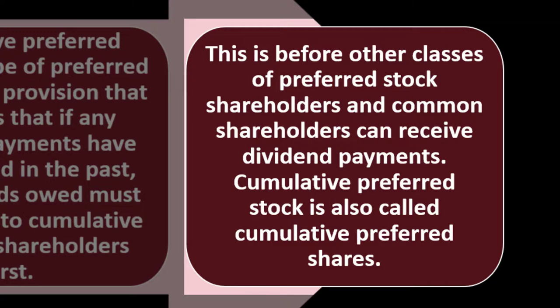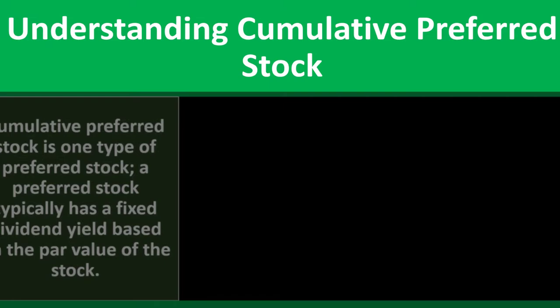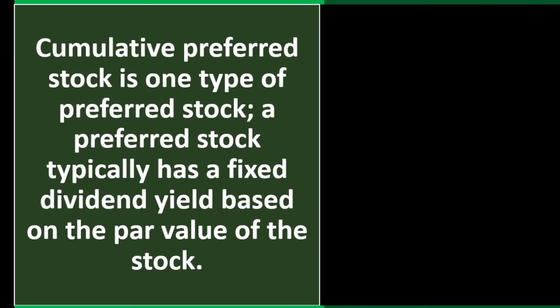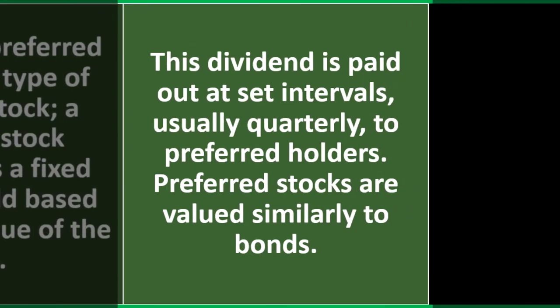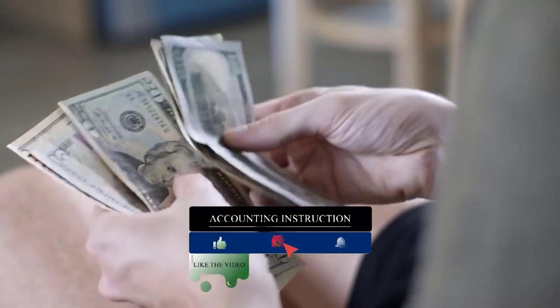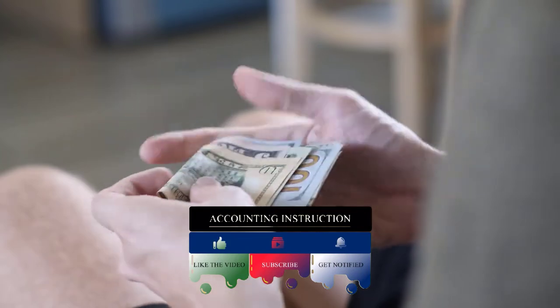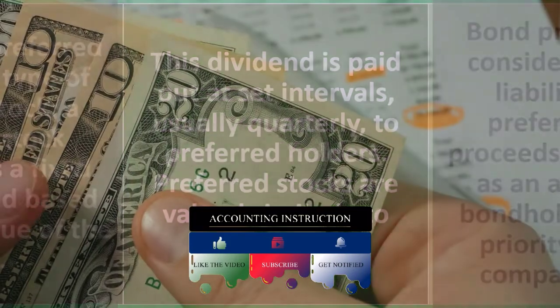Cumulative preferred stock must be paid before other classes of preferred stock shareholders and common shareholders can receive dividend payments. It's also called cumulative preferred shares. A preferred stock typically has a fixed dividend yield based on the par value of the stock, paid out at set intervals — usually quarterly — to preferred shareholders. Preferred stocks are valued similarly to bonds, so you have a somewhat fixed payment, even more so than dividends to common stockholders, making it similar in format to interest payments on a bond.